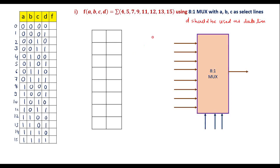The minterm values indicate that for those values the output is 1. Minterm 4 means 0,1,0,0 — output is 1. Minterm 5 — output is 1. Minterm 7, that is 0,1,1,1 — output is 1. For 9, output is 1. For 11, 12, 13, and 15 — output is 1. In all other cases, output is 0.